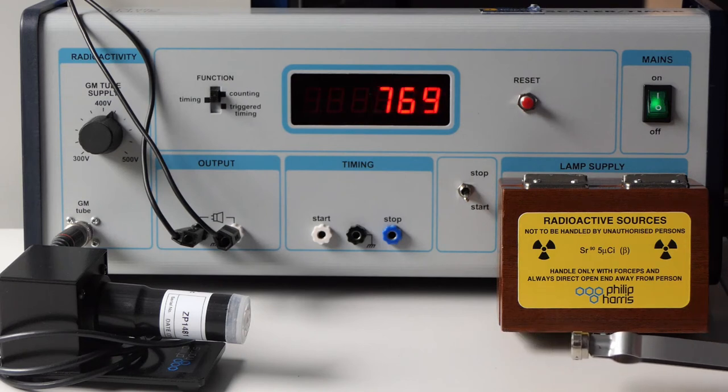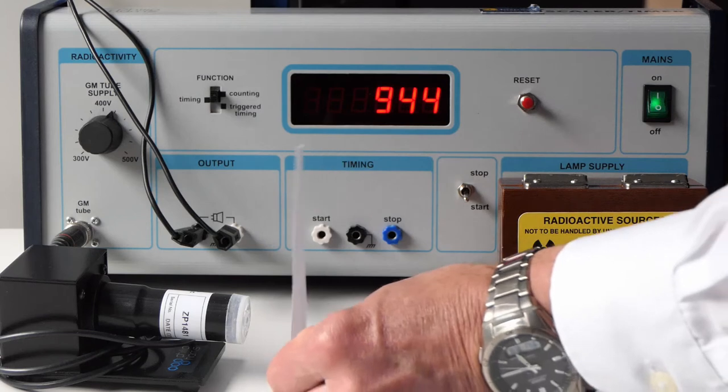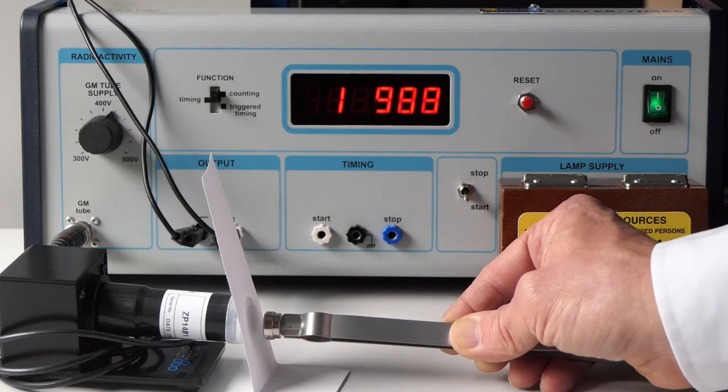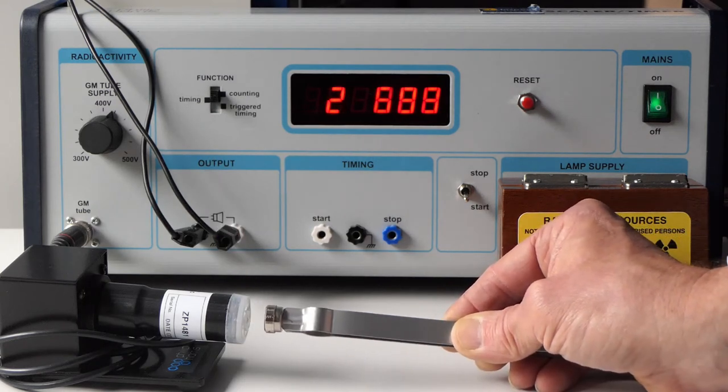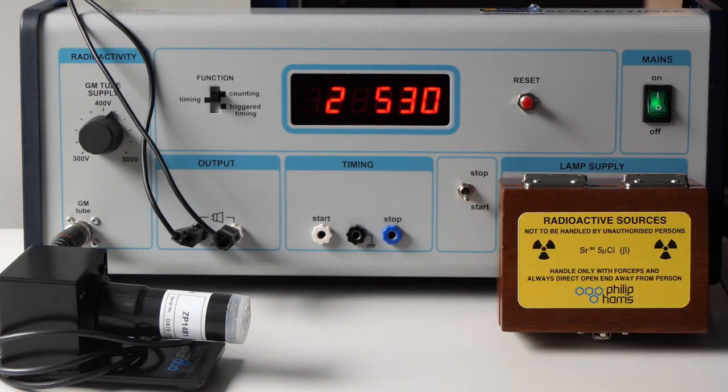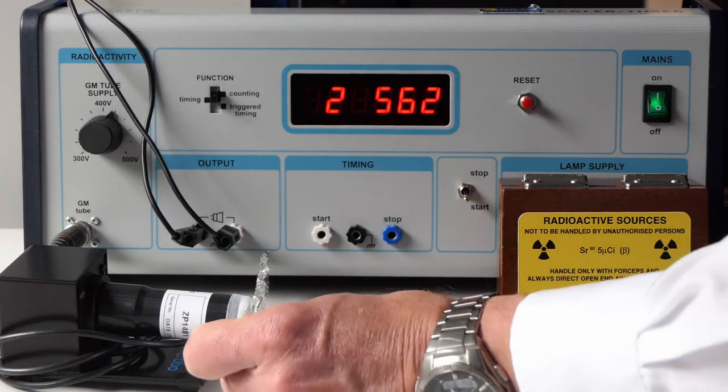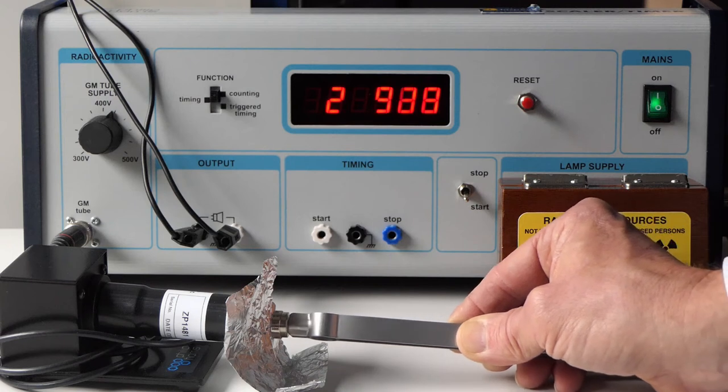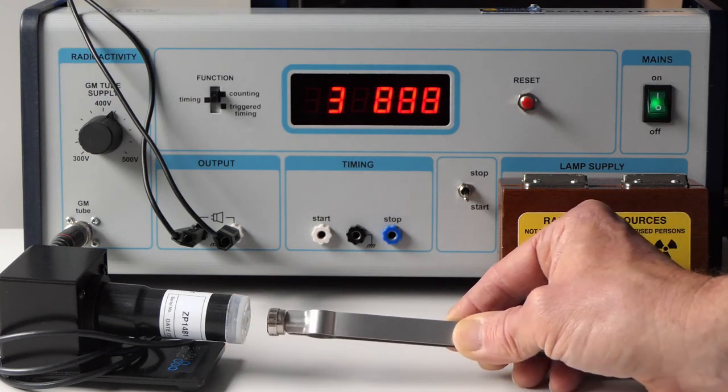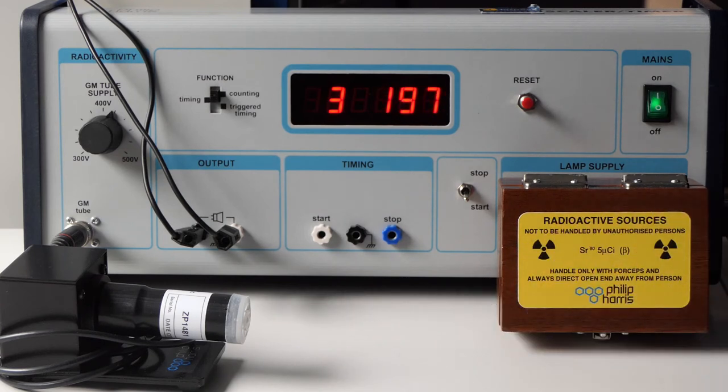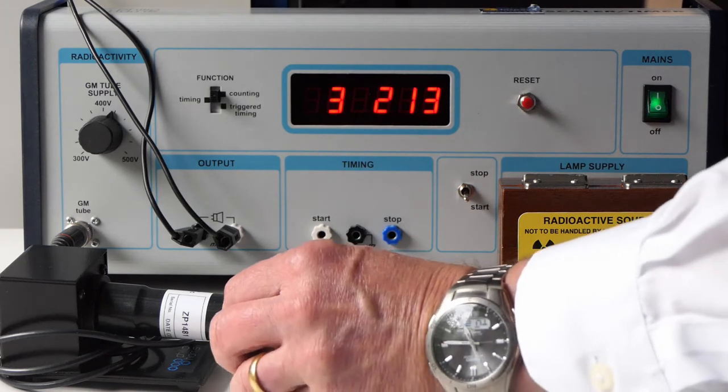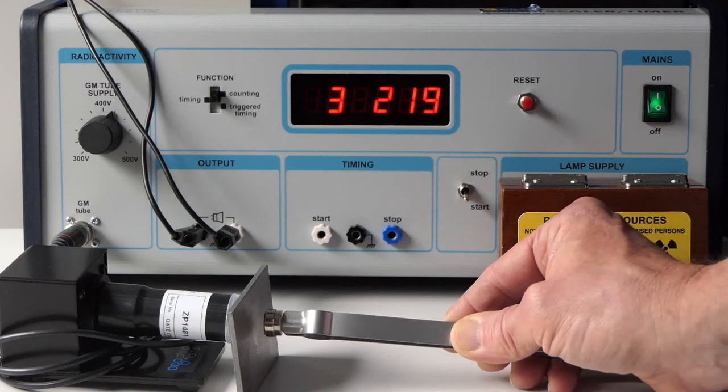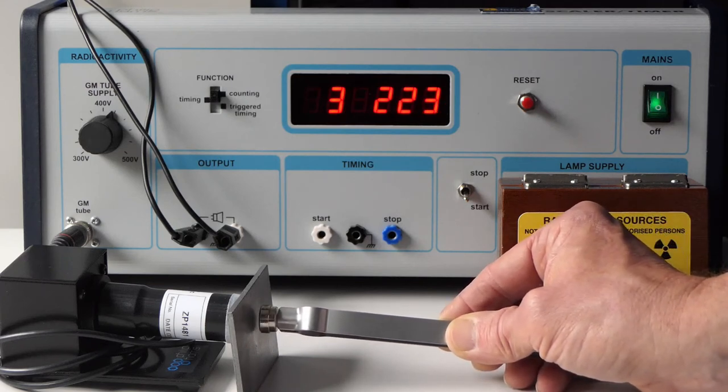The beta radiation has a much greater range than the alpha. Beta radiation is effectively blocked by a few millimeters of lead.